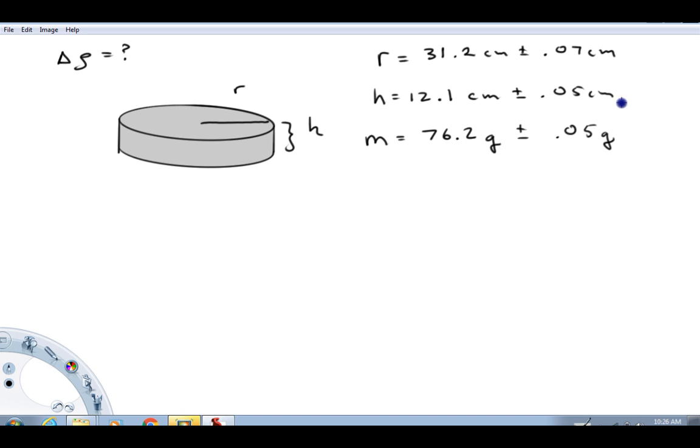So now we're going to talk about how to calculate the uncertainty in the density. So this is the Greek letter rho, typically represents density in lots of math problems, and density is mass over volume. In this example, the volume is a cylinder, and the volume of a cylinder is pi r squared times h.